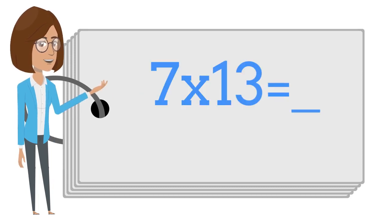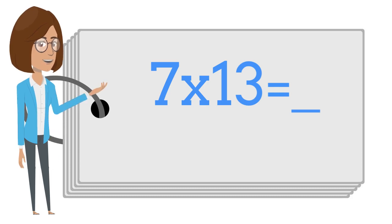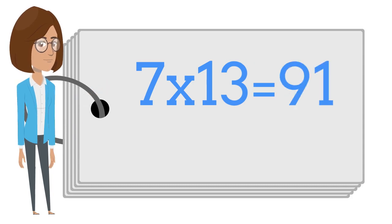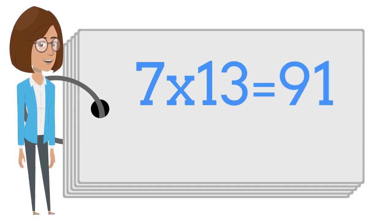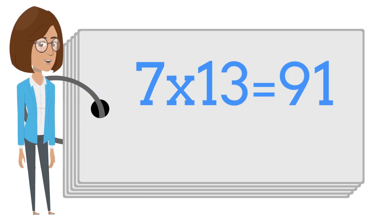7 times 13 is — say the answer out loud. 7 times 13 is 91.